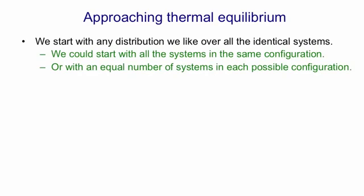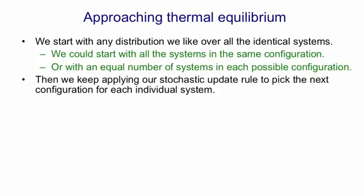We can start with any distribution we like over all these identical systems. We could make them all be in the same configuration — a distribution with probability one on one configuration and zero on everything else — or we could start them off with an equal number of systems in each possible configuration, which is a uniform distribution. Then we keep applying our stochastic update rule: pick a unit, look at its energy gap, make a random decision based on that energy gap about whether to turn it on or off, then pick another unit, and so on.